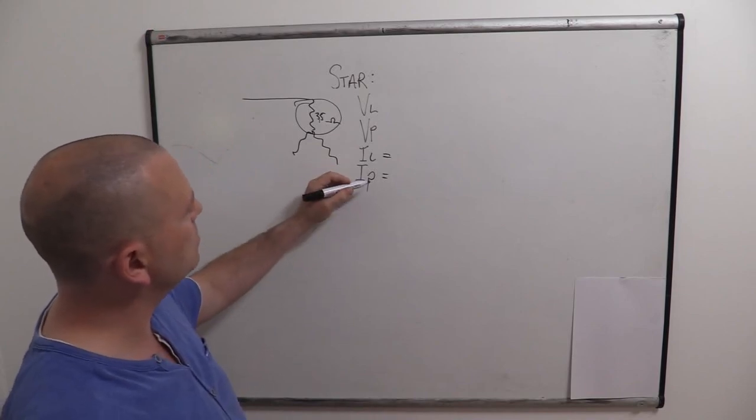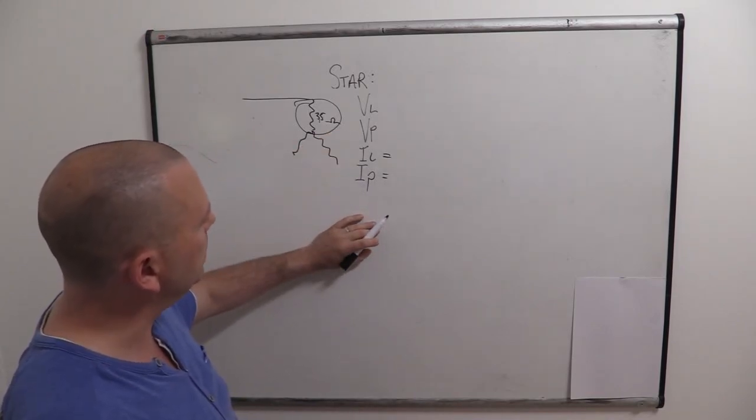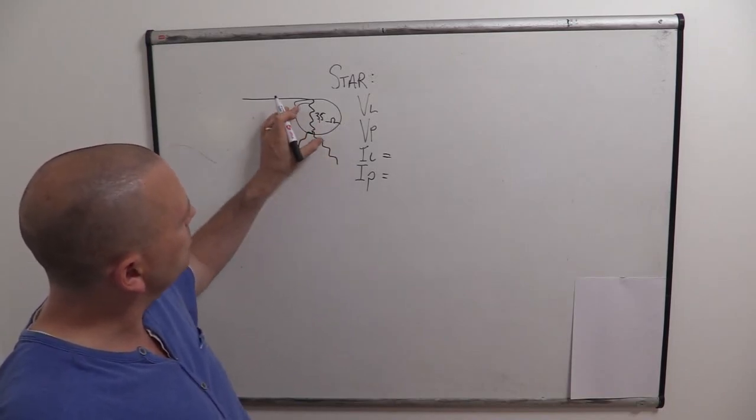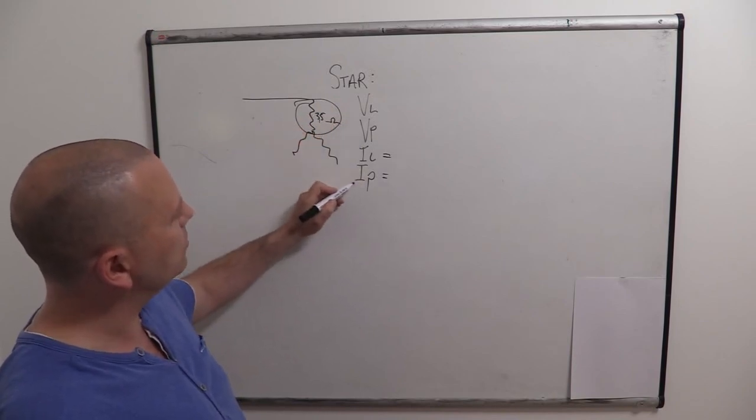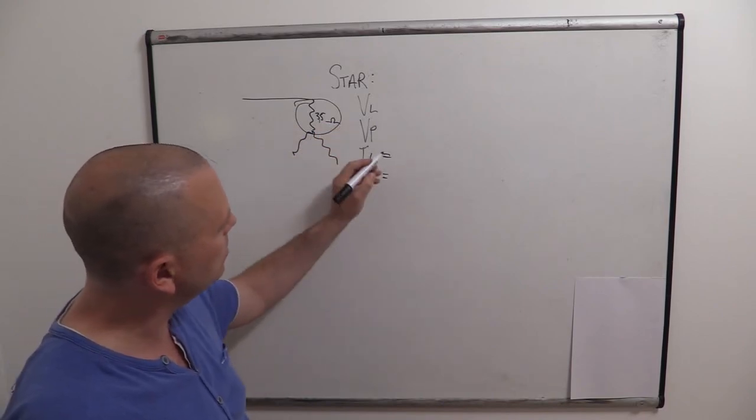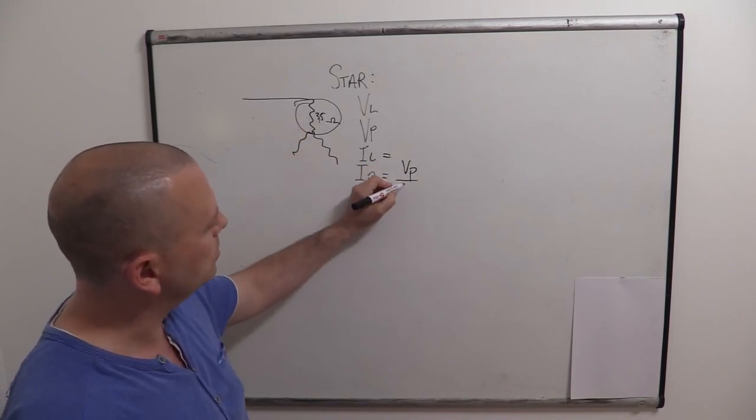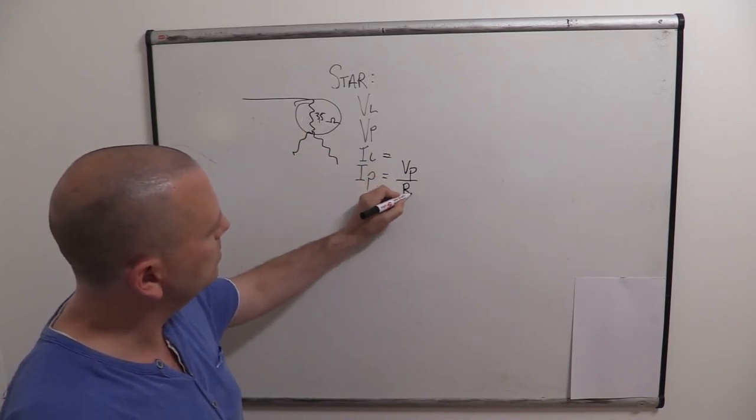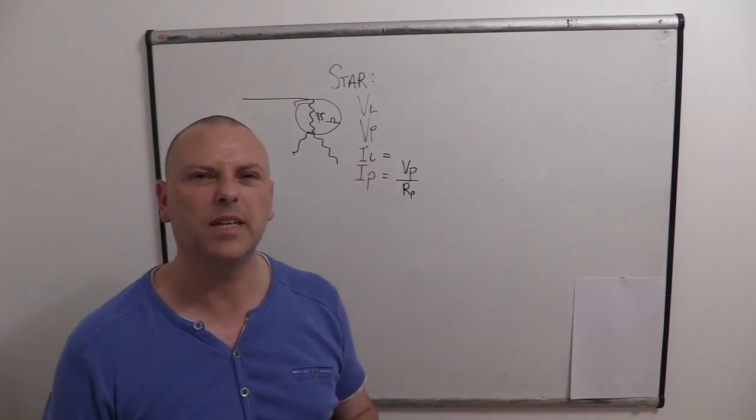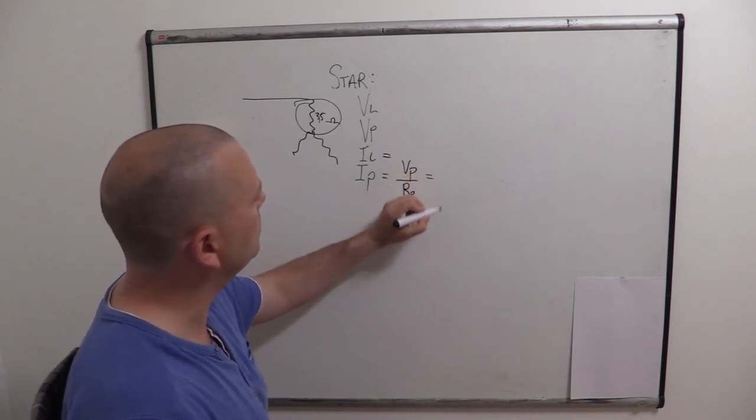So we'll work out the phase current, and then we know that that's going to be the same as our line current. So to work out a phase current, it's still Ohm's law, it's volts divided by whatever's getting in the way. And we just need to decide which volts we're talking about. But we said we're zooming in and we're dealing with phase current, so it makes sense to keep the phase resistance and the phase voltage. So it'll be VP over RP if you like.